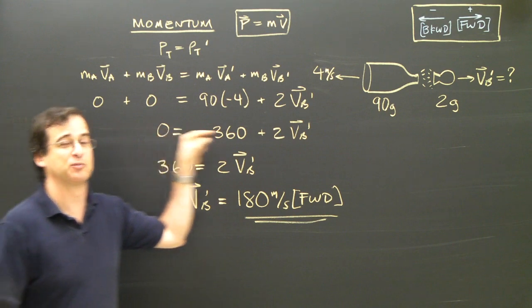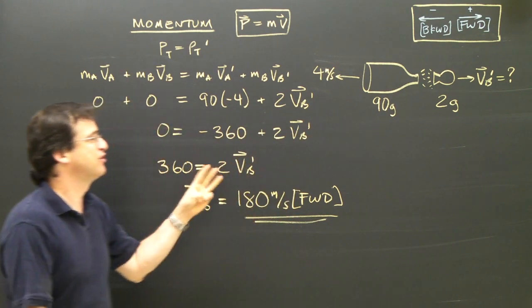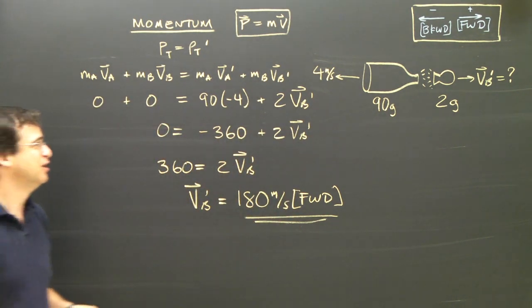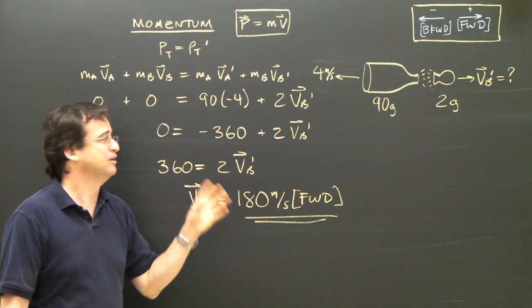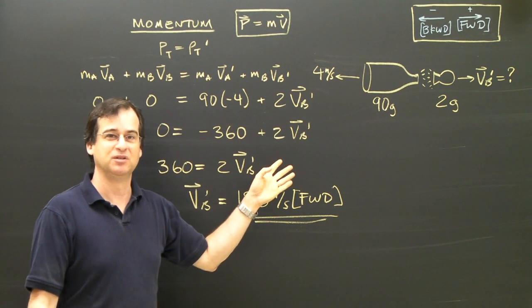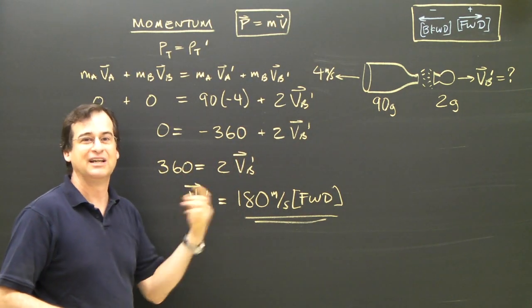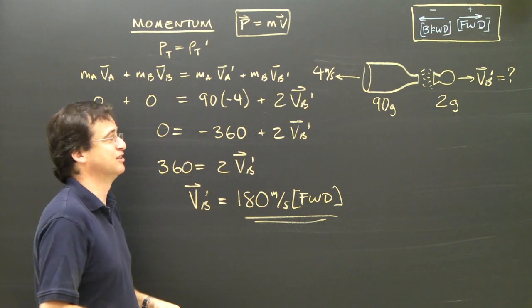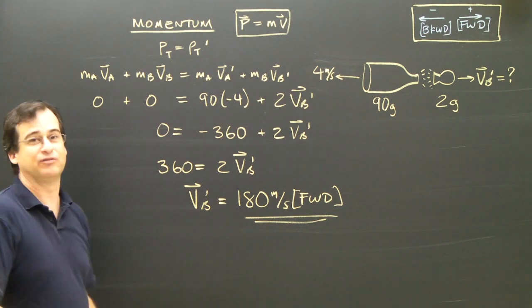So those are the three types of momentum problems you're probably going to see when you're doing linear momentum. What we need to do is do some now where they collide at an angle and see how that changes things. So there will be some videos on that in the future.